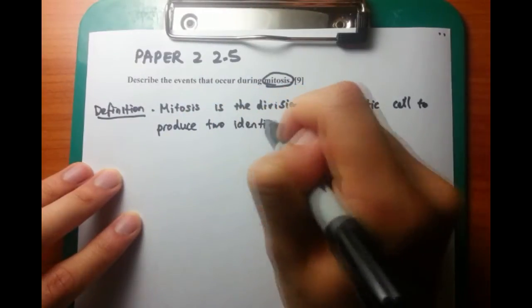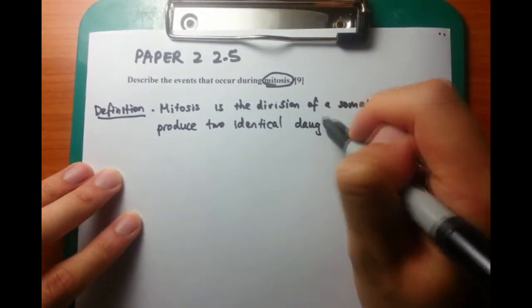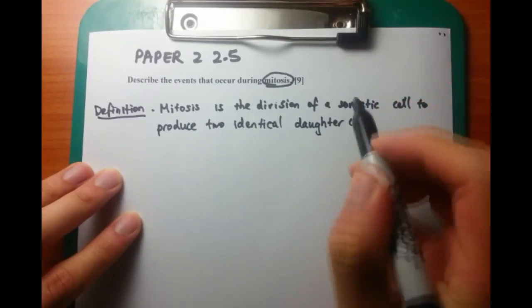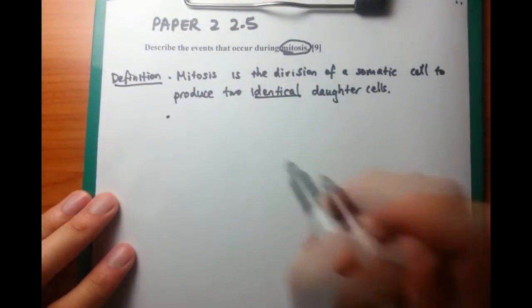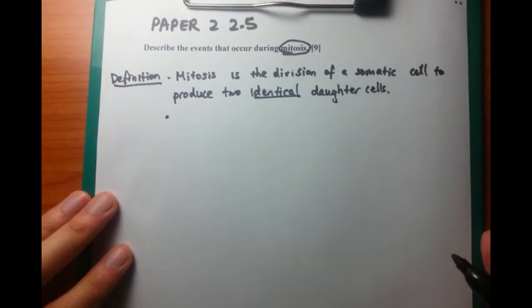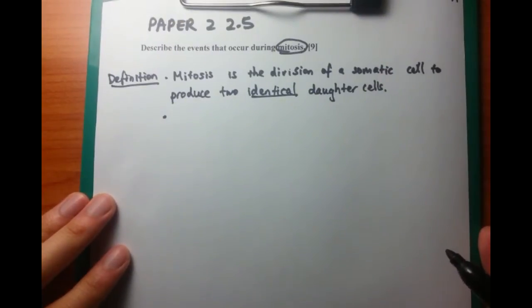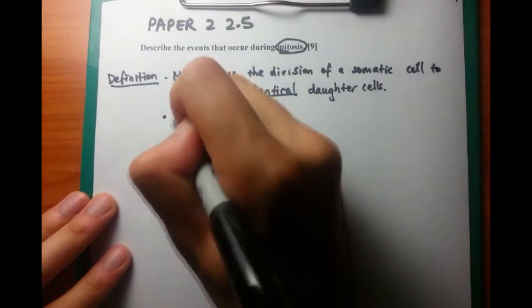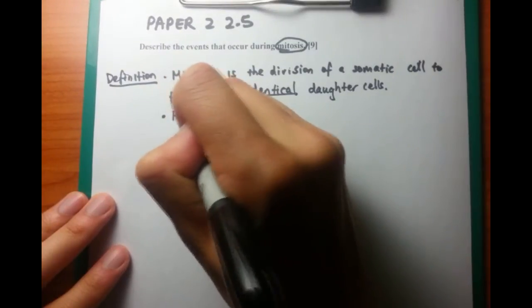Now, the next thing that we can talk about is the different stages of mitosis. And you just need to remember a simple mnemonic called PMAT, or P-M-A-T. And these describe the different stages, the four different stages within mitosis itself.